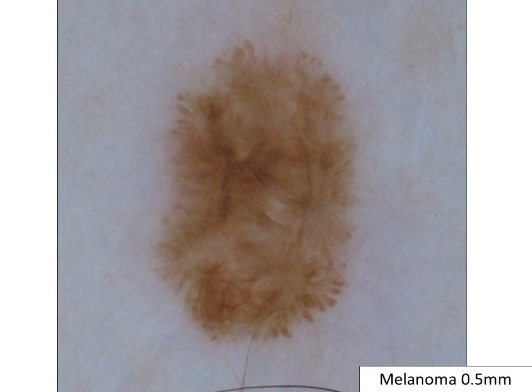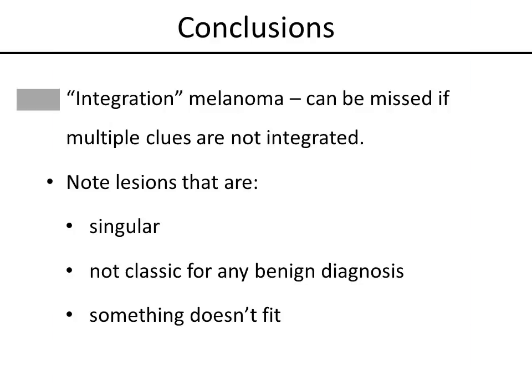In conclusion, subtle melanomas can be missed if multiple clues are not integrated. Note lesions that are singular — none of the patient's other lesions look exactly like it. Note lesions that are not classic for any benign diagnosis in pattern. And also, something doesn't fit if there is a mismatch between the criteria.